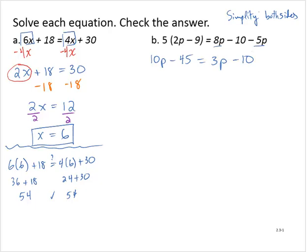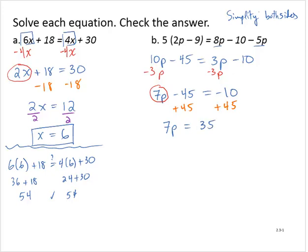I notice there are variable terms on both sides of the equation, so I want to remove the variable term from one side. I'll subtract 3p from both sides, yielding 7p minus 45 is equal to negative 10. Then I identify the single variable term and isolate it by adding 45 to both sides, yielding 7p is equal to 35. Dividing through by 7, p is equal to 5.